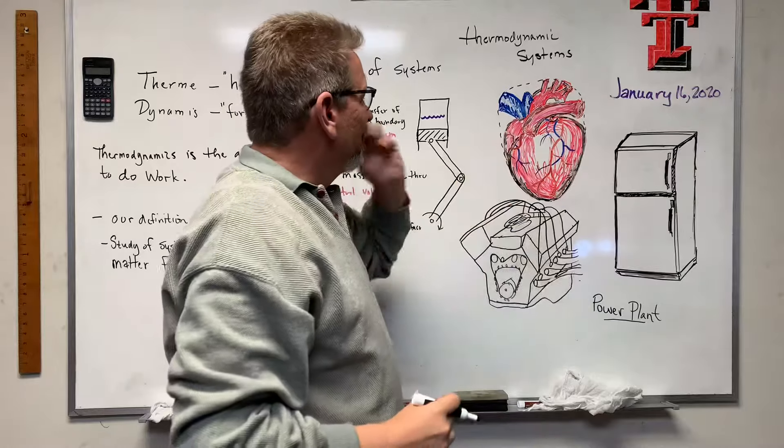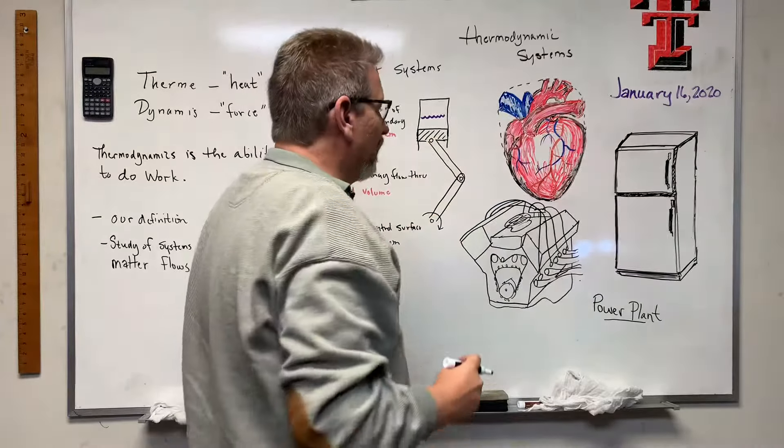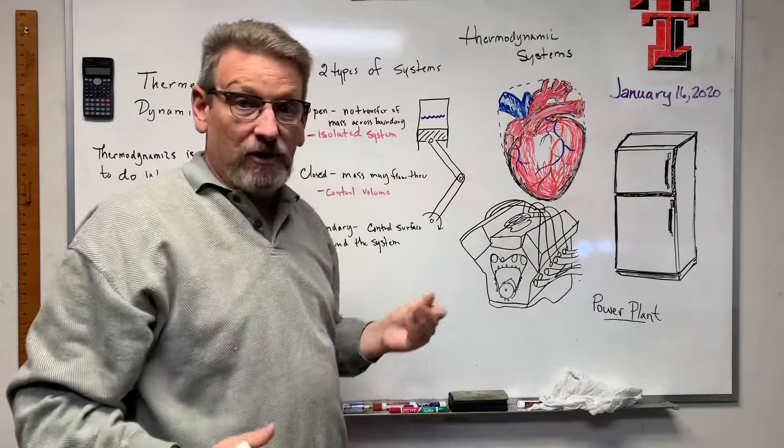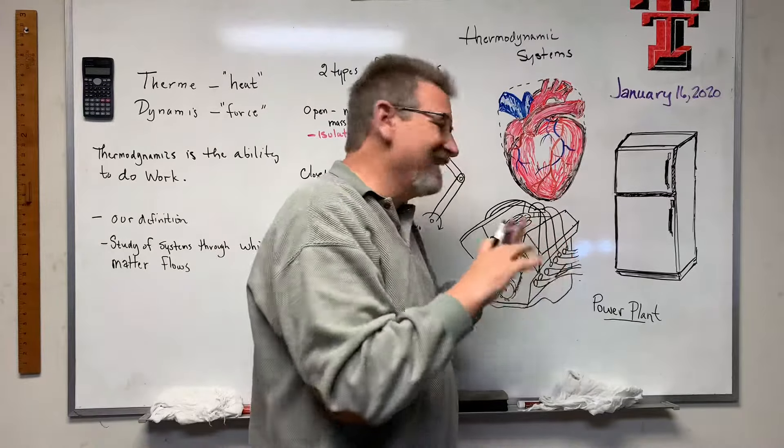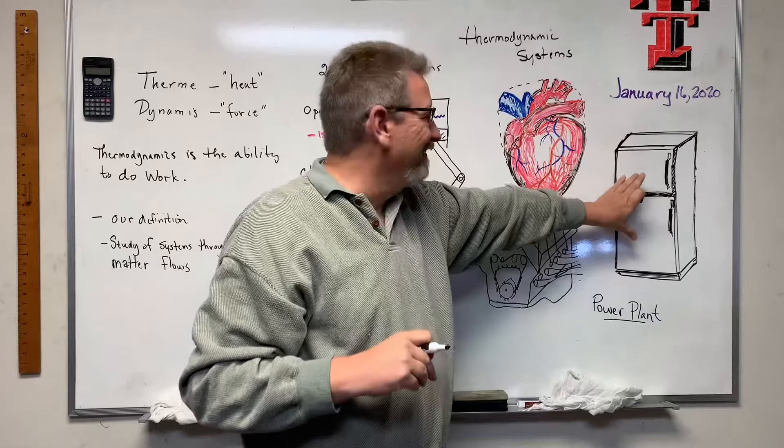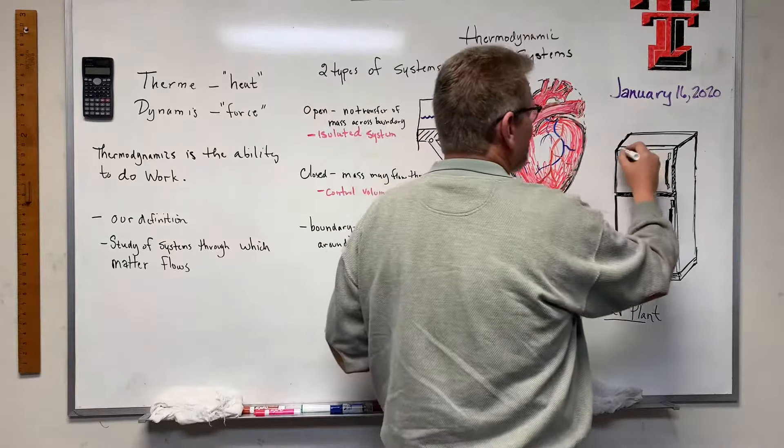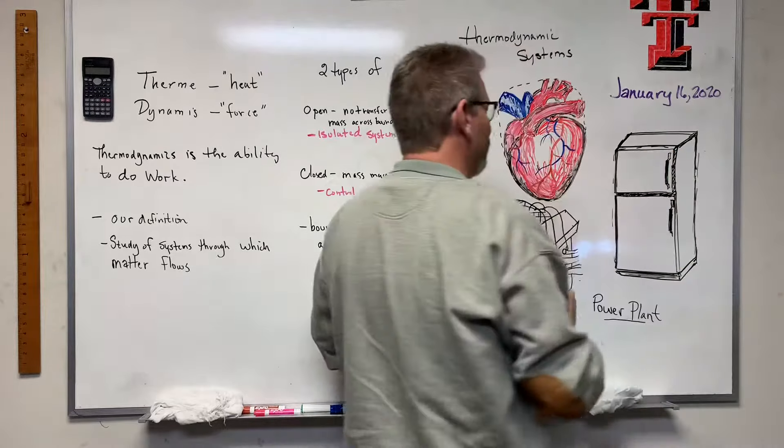The system itself - we could just draw a dashed line around here and that's the system. Anything outside of that is surroundings. Now this system is going to have things flowing in and out of it, as you know. Another system we could talk about is a refrigerator. That's a closed system where nothing flows in.